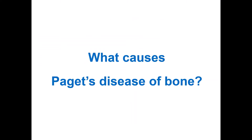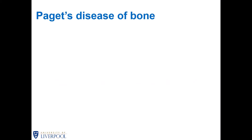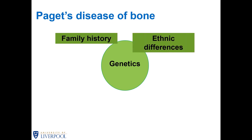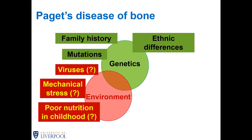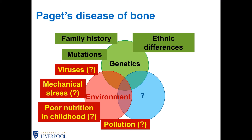So what causes Paget's disease of bone? I'm afraid there is no straight answer to this question. We know that genetic factors can play an important role because family history is common, ethnic differences occur, and a number of mutations have been found to be associated with Paget's disease. On the other hand, the environment may play a role as well — historically viruses have been implicated, as well as mechanical stress, poor nutrition in childhood, and even pollution. Finally, a combination of these factors, or epigenetic factors that influence gene function without changing the genetic makeup, may also play a role.